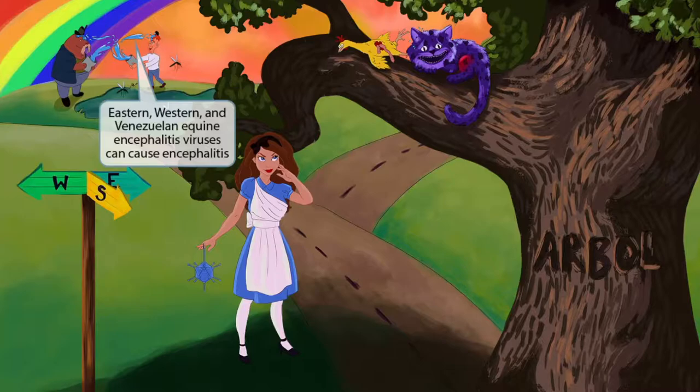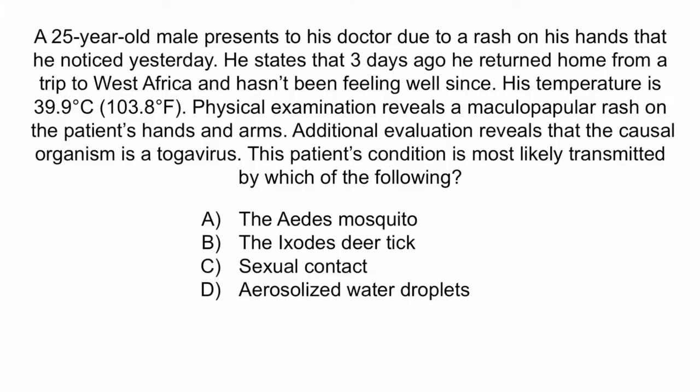Now that we've covered the image, let's review with a question. A 25-year-old male presents to his doctor due to a rash on his hands that he noticed yesterday. He states that three days ago he returned home from a trip to West Africa and hasn't been feeling well since. His temperature is 39.9 degrees Celsius, or 103.8 degrees Fahrenheit. Physical examination reveals a maculopapular rash on the patient's hands and arms. Additional evaluation reveals that the causal organism is a togavirus. This patient's condition is most likely transmitted by which of the following?